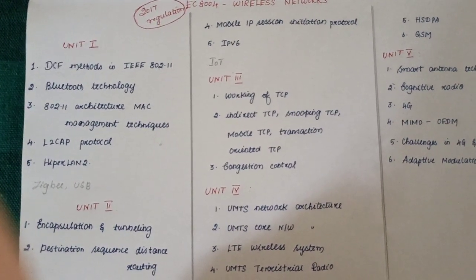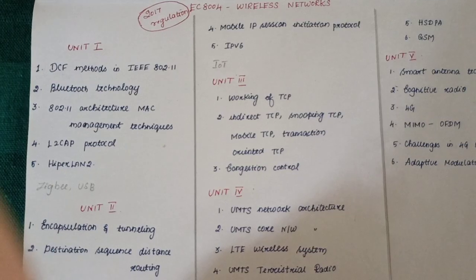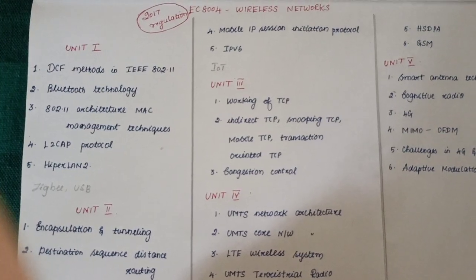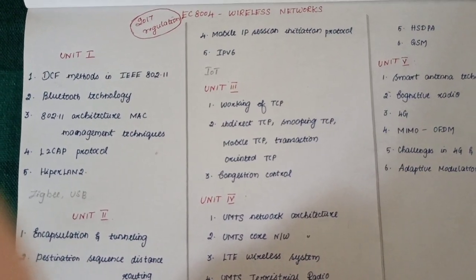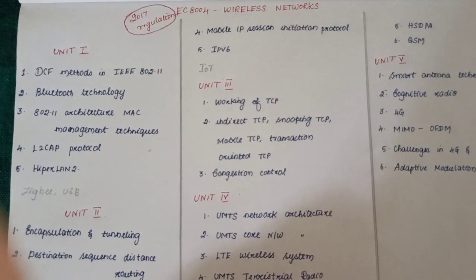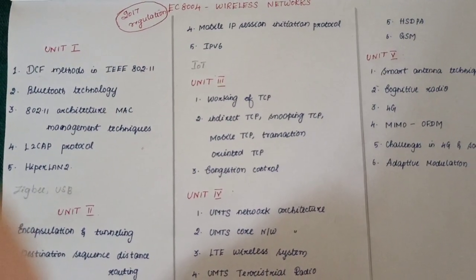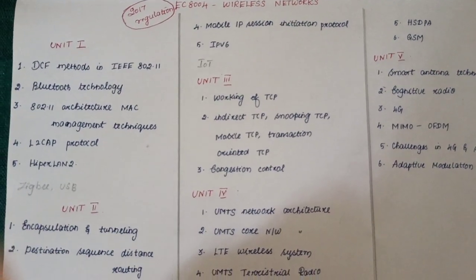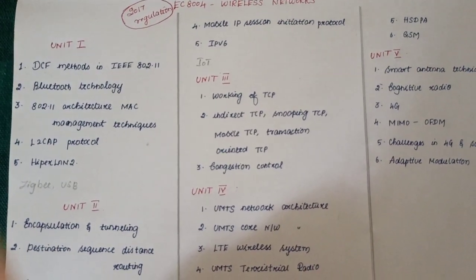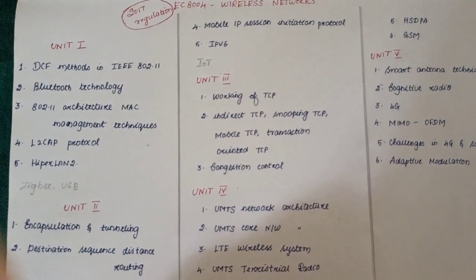Additionally, ZigBee and USB are included in the syllabus under the 2017 regulation. In the 2013 regulation there are 5 questions; in the 2017 regulation, just ZigBee and USB are added.